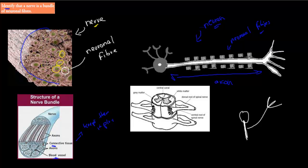One more thing: when it comes to the length of these neurons, they can actually be really long. Sometimes one neuron — especially the axon, which is the long part — can be up to a meter long. You can have one actual neuron stretching from, for example, your spinal cord all the way to your fingers or to your feet. That's how long they can be.